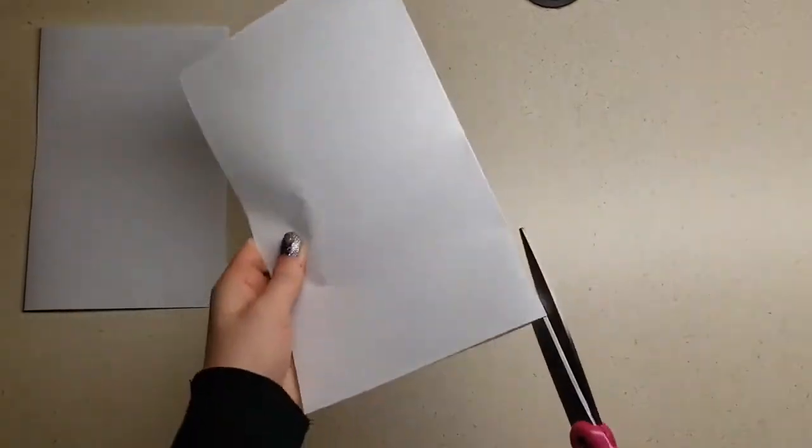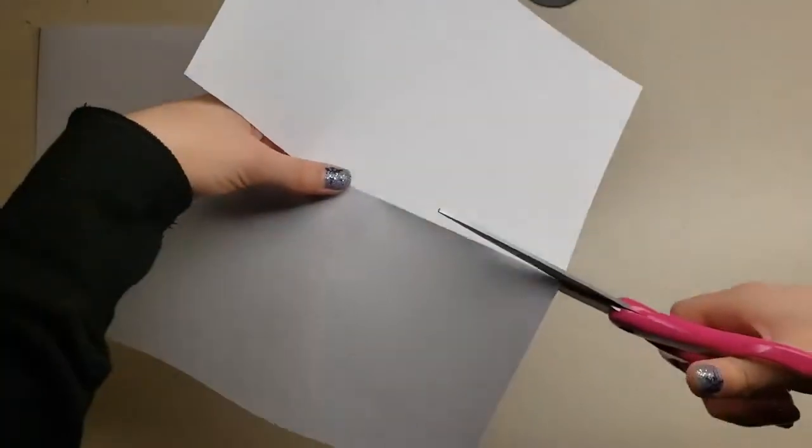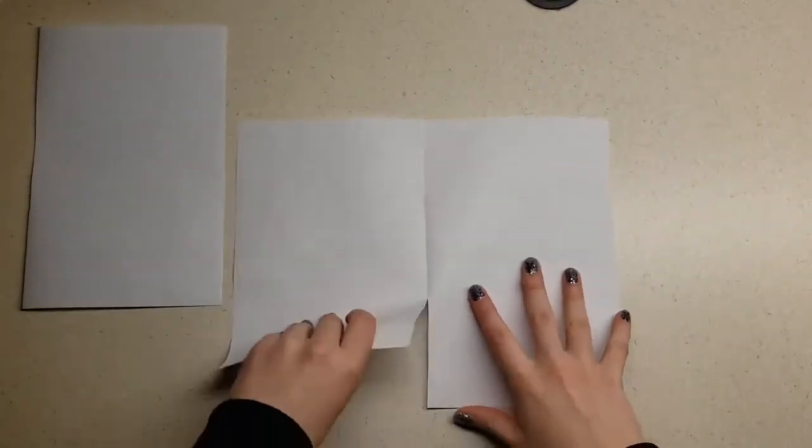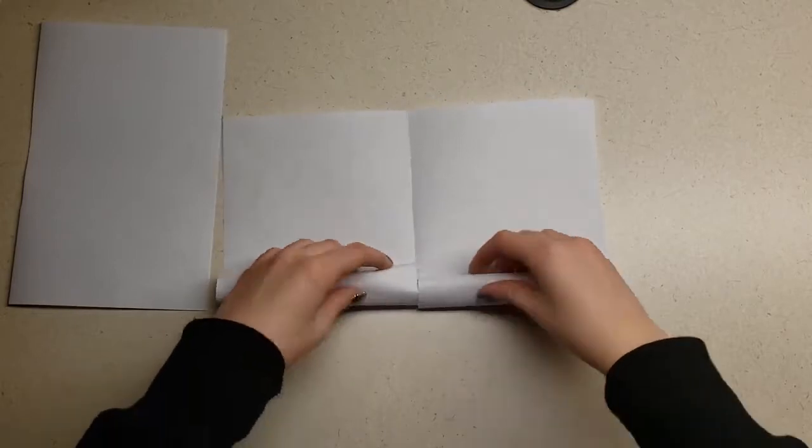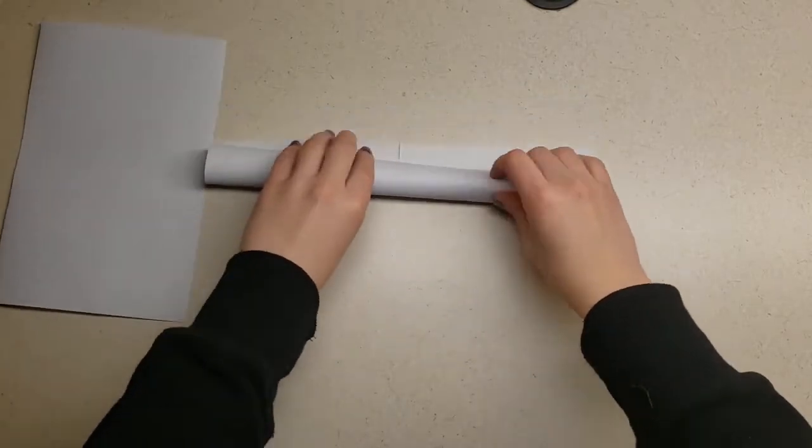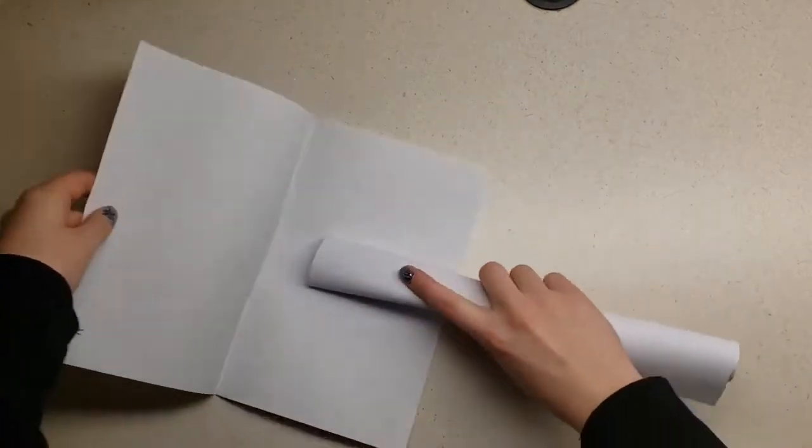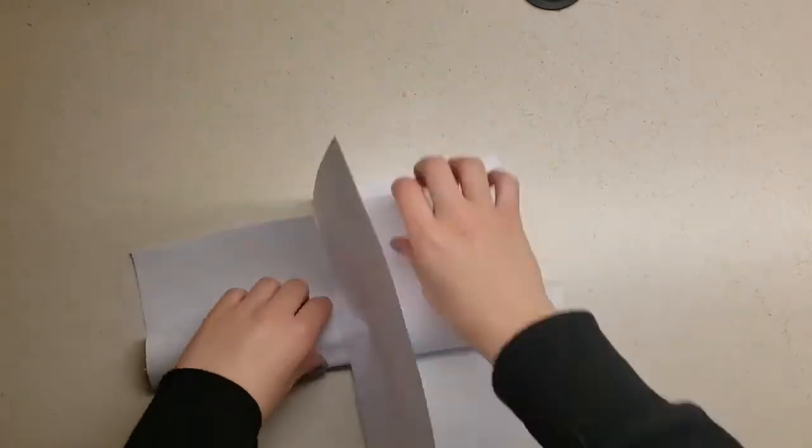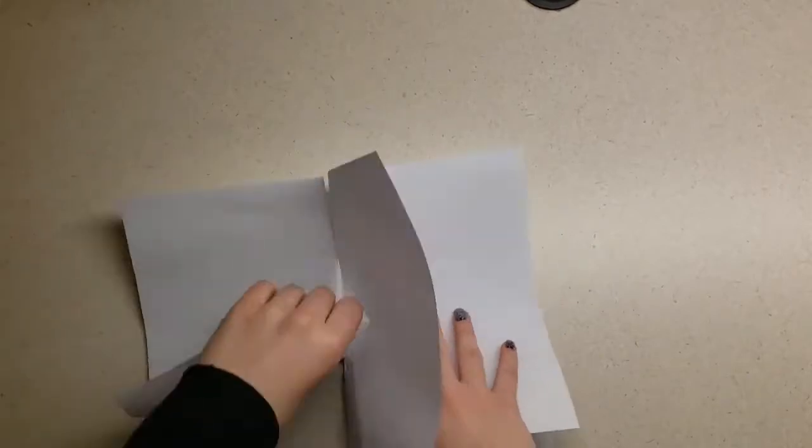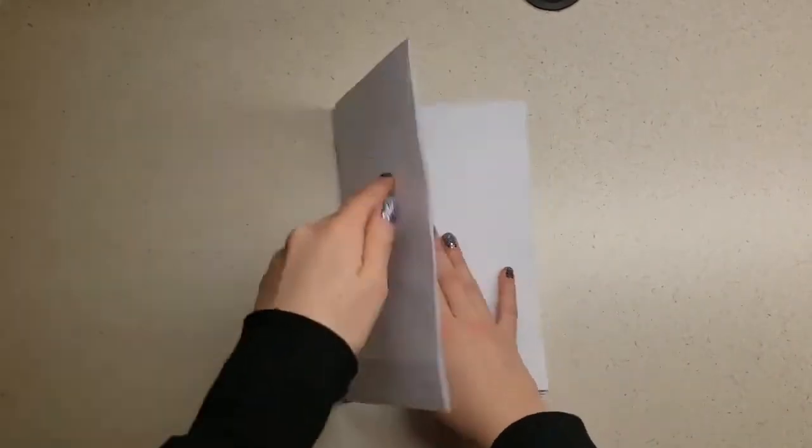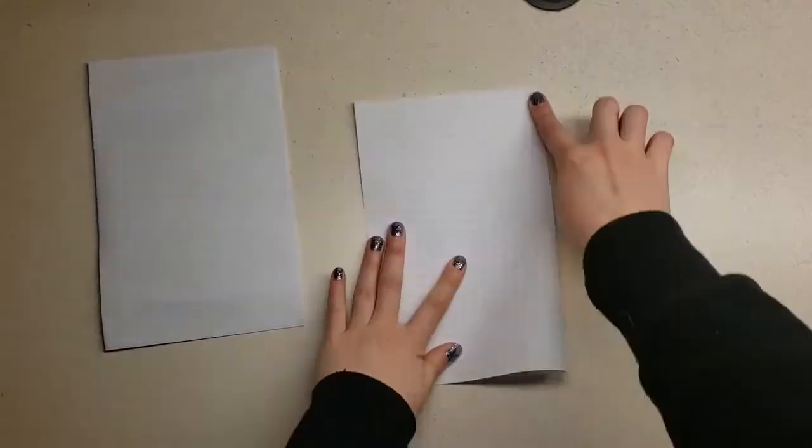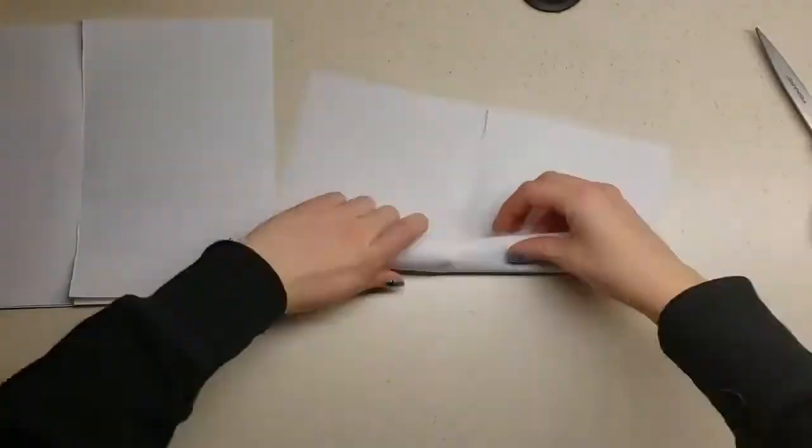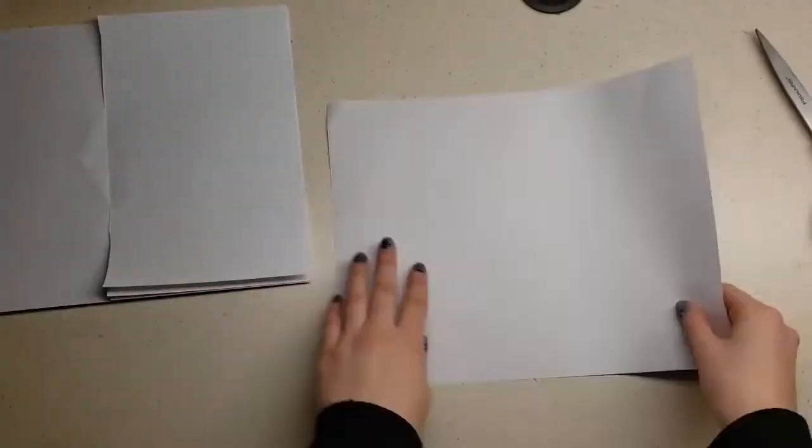Next, fold another sheet of paper in half and cut three-inch long slits at the bottom and top of the fold. So now we have something that looks like this. Roll this piece of paper up, and slide it through the hole we cut in the middle of our first piece of paper.